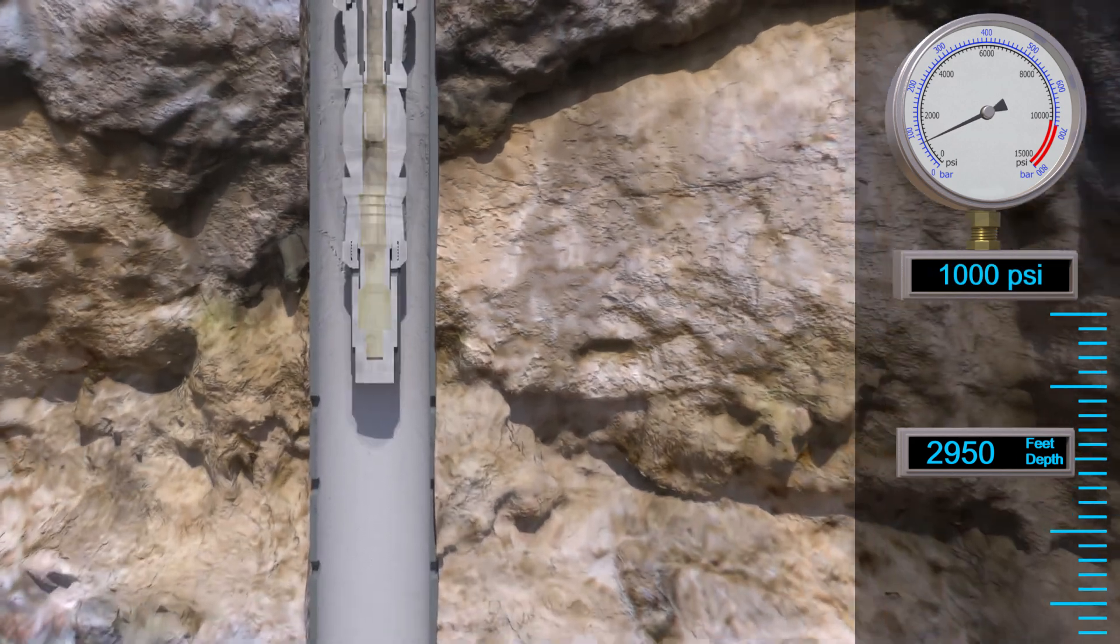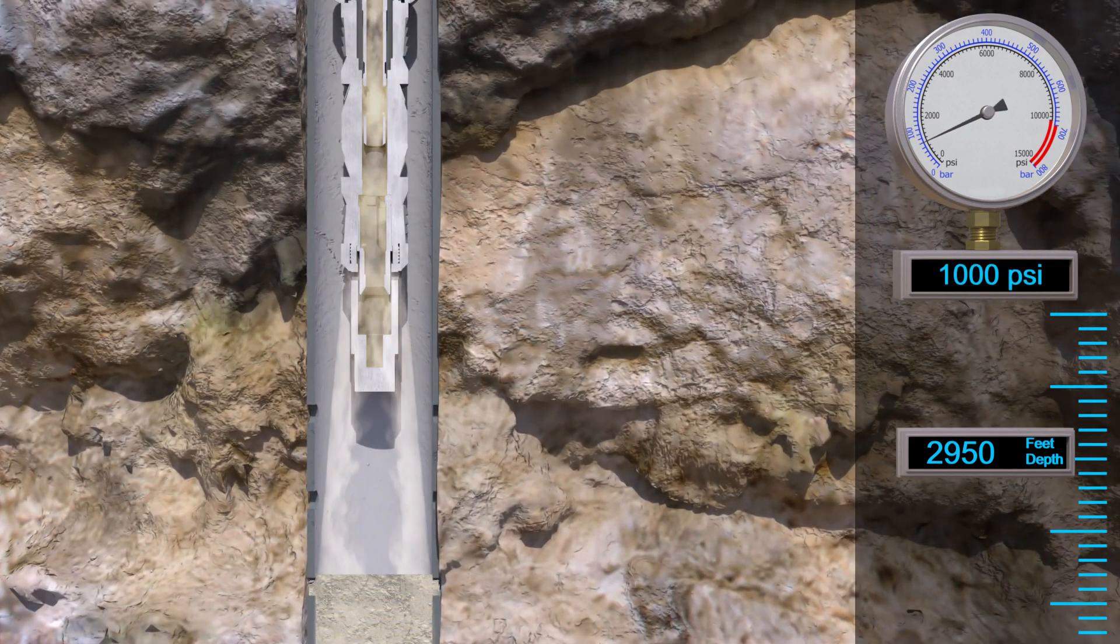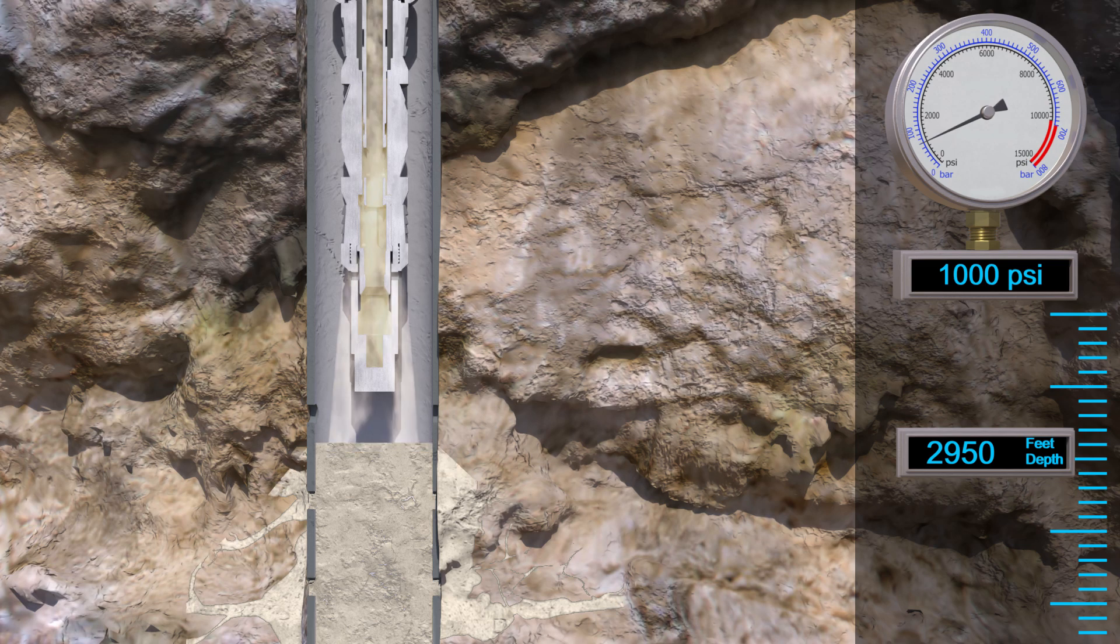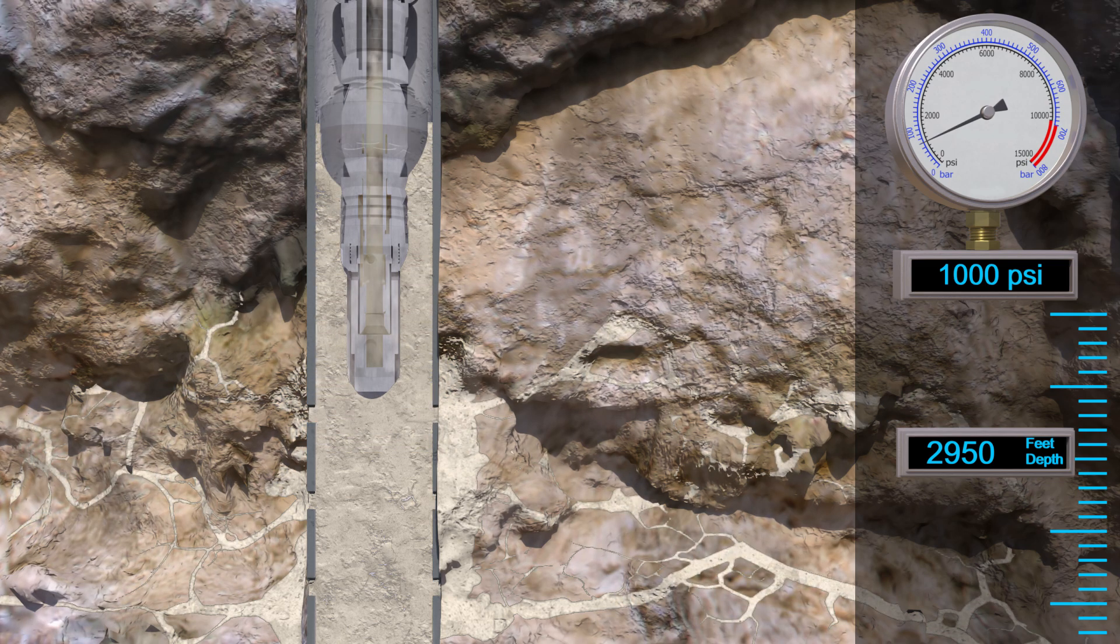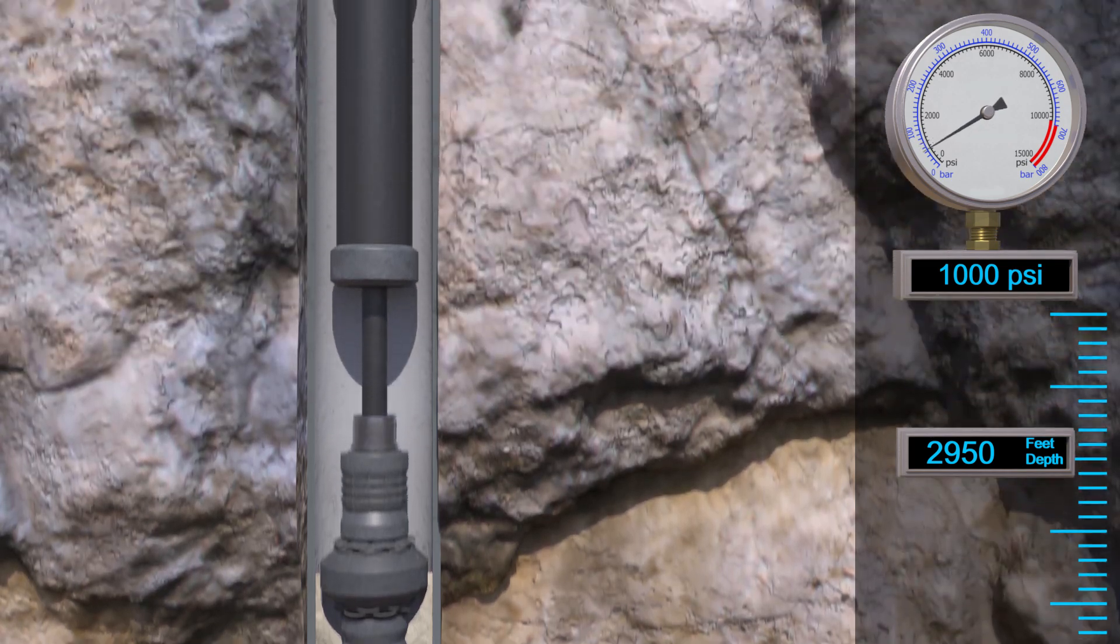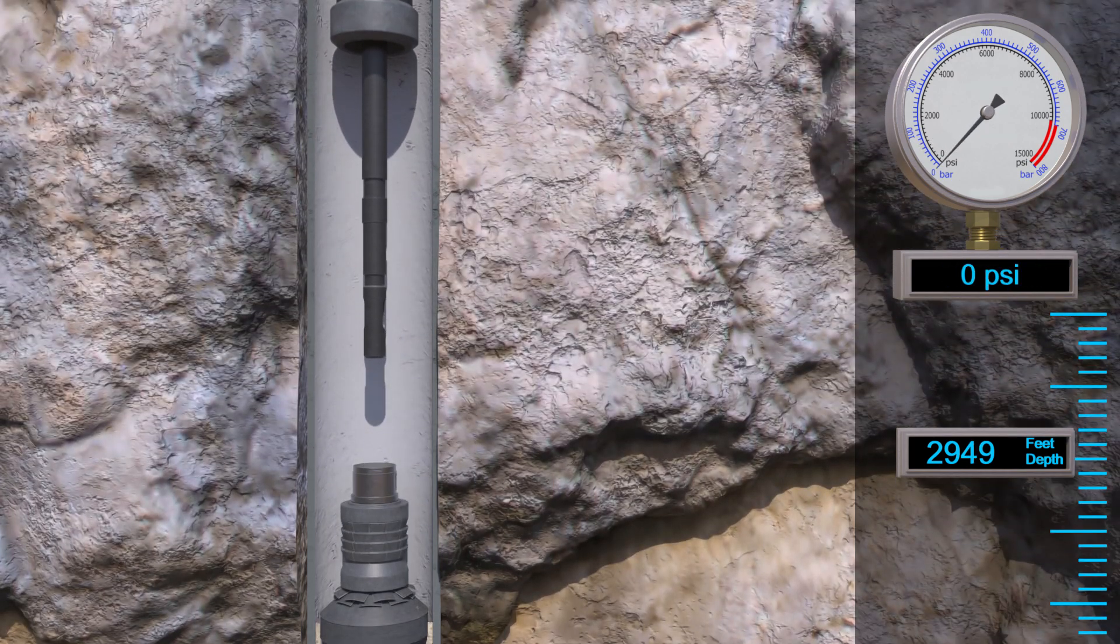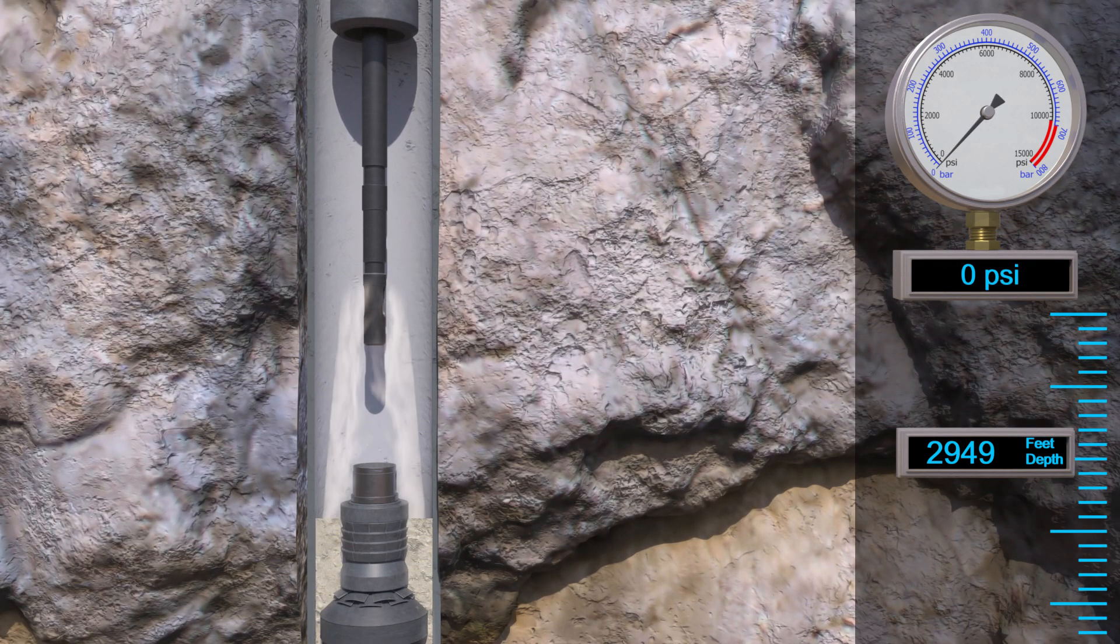Now we're going to use our all-in-one tool again and set a retainer just above where we perforated. Okay, retainer is set. Let's sting in and pump cement below the retainer and through the perforations and up the backside of the production casing. Casing cement fixed.